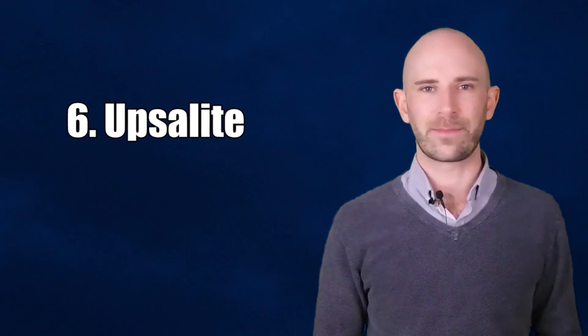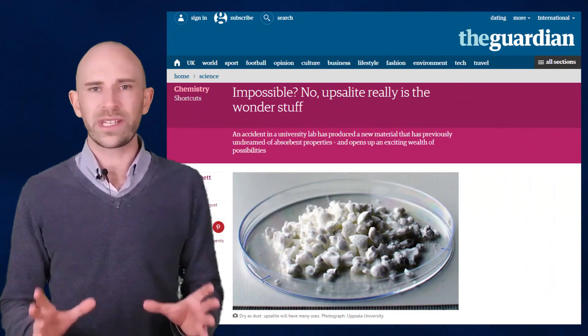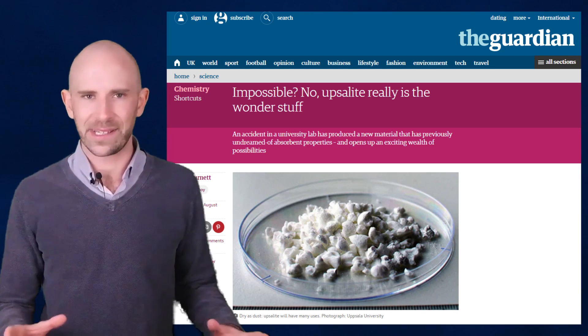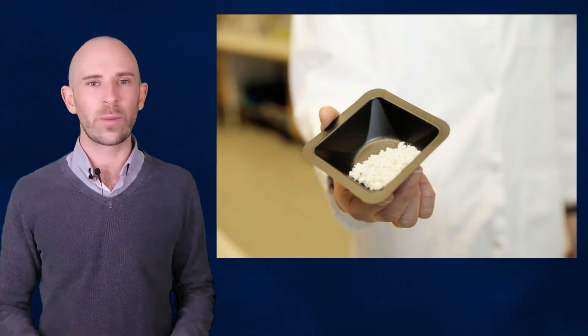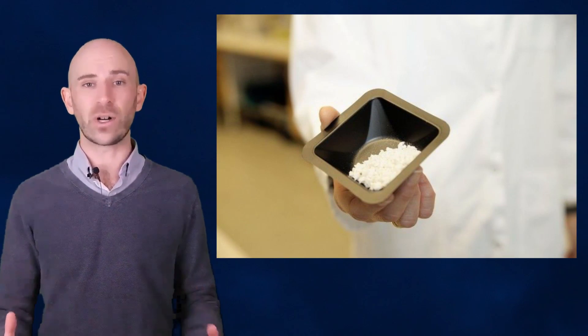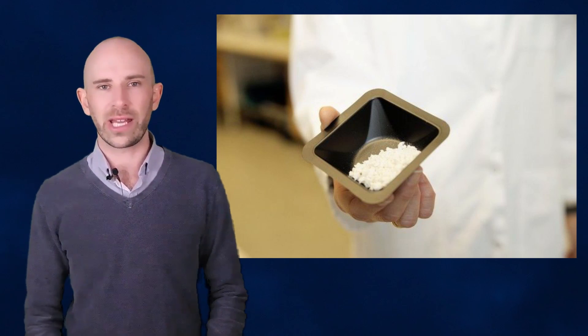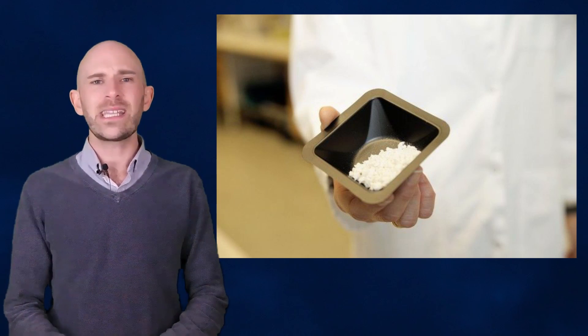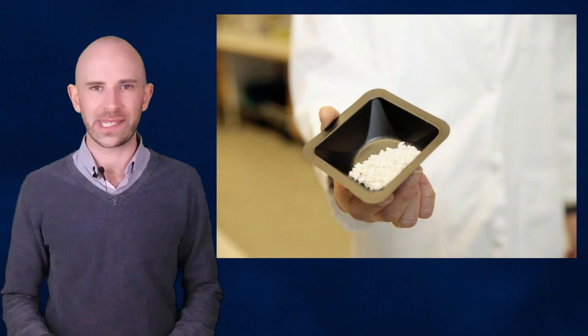Number 6: Upsalite. Imagine making the most absorbent substance known to man by accident. Researchers at Uppsala University in Sweden accidentally left equipment running over the weekend causing the magnesium carbonate they were working with to turn into a powder that has a surface area of 800 meters for just one gram of it. This extremely porous material is so absorbent it's referred to as an impossible material. The most expensive absorber material until now, zeolite, doesn't even hold a candle to its absorbency.